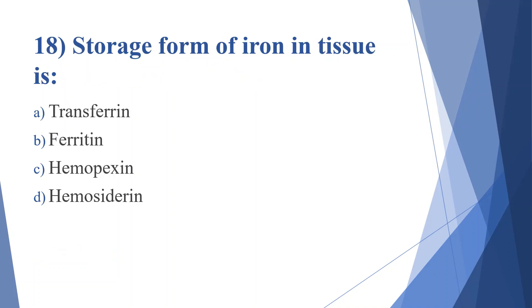Eighteenth question: storage form of iron in tissue is. Option A: transferrin. Option B: ferritin. Option C: hemopexin. Option D: hemosiderin. Answer is option B, ferritin.